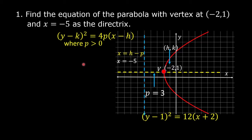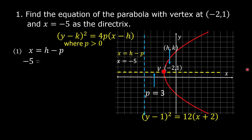If you want a full solution, solve for p using the equation of the directrix. We have x = h minus p. Replace x with -5 because the directrix is x = -5, and replace h with -2. So we have -5 = -2 - p.